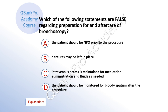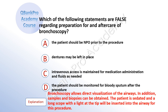Which of the following statements are false regarding preparation for and aftercare of bronchoscopy? A, the patient should be NPO prior to the procedure. B, dentures may be left in place. C, intravenous access is maintained for medication administration and fluids as needed. D, the patient should be monitored for bloody sputum after the procedure. The correct answer is B, dentures may be left in place. Explanation: Bronchoscopy allows direct visualization of the airways. In addition, samples and biopsies can be obtained. The patient is sedated and a long scope with a light at the tip will be inserted into the airway for the procedure.